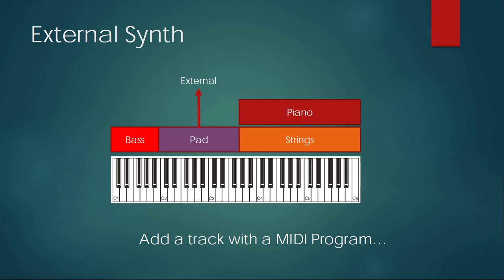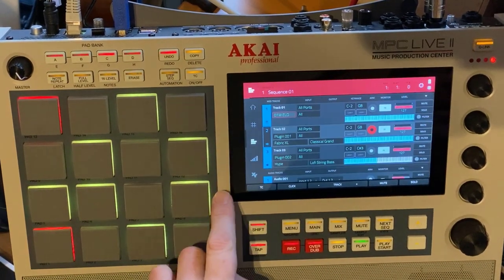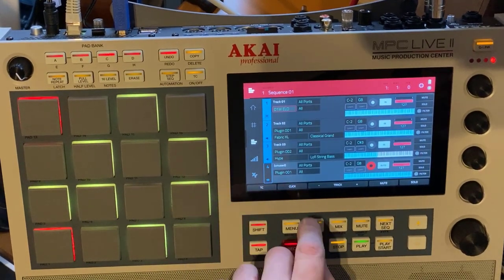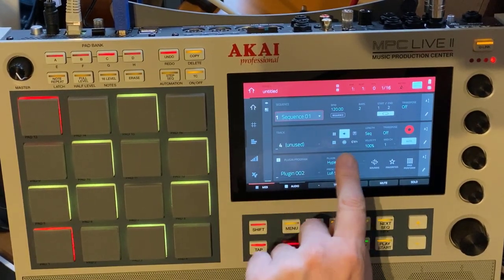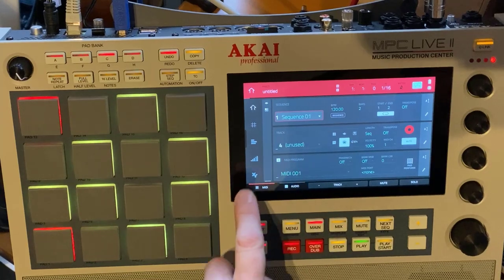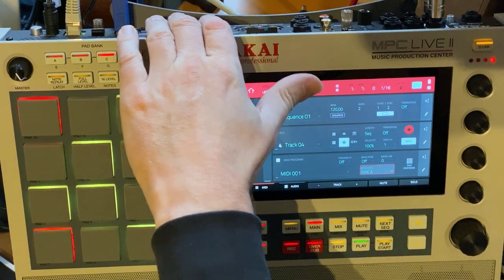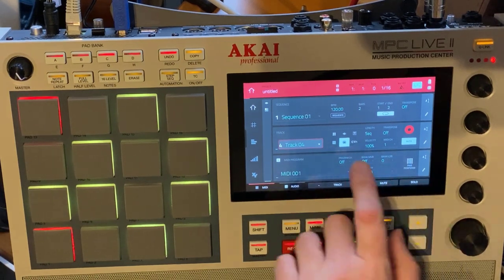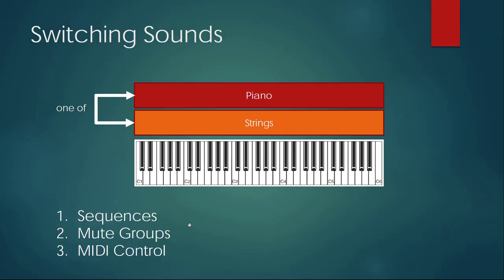For triggering external sounds with an additional keyboard, you can go to the track list and add a new MIDI track. In the track view there is an option to use a MIDI output - you can select MIDI output 1 or 2 depending on your devices, and send program changes and the usual MIDI data. This is really nicely done and easy to use.